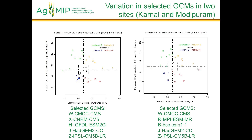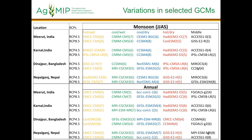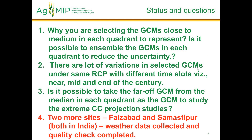So you're going to be running for Modipuram and for Karnal. You'll be running these GCMs - you have a few differences amongst the GCMs. So MPI - okay, this is the set for each of these sites.